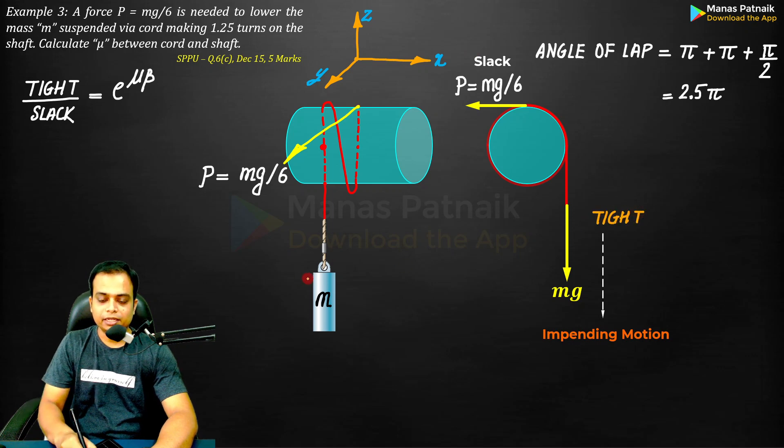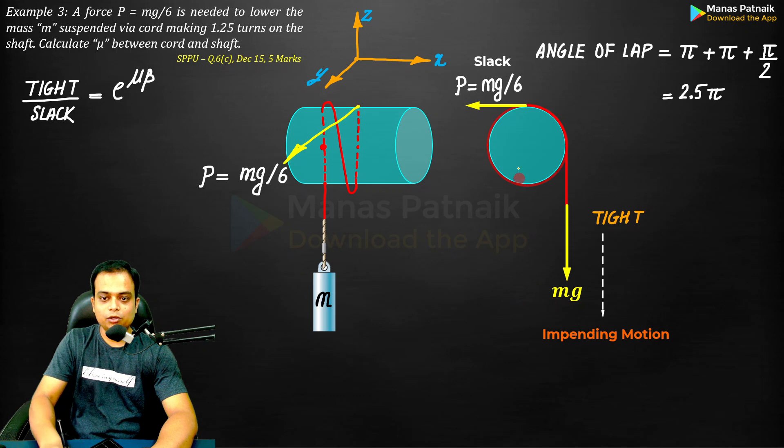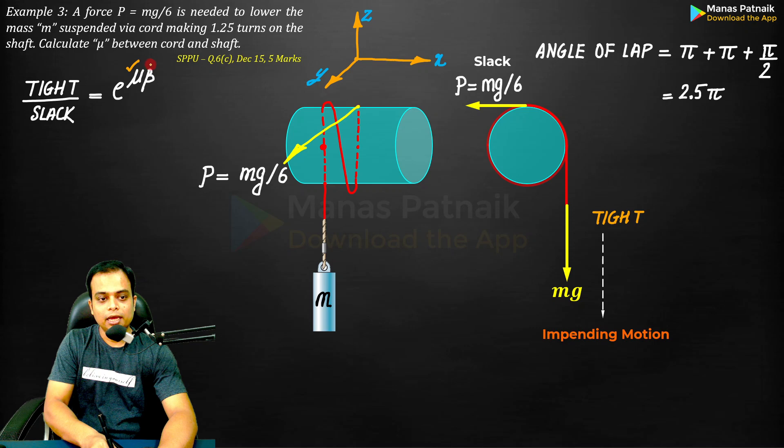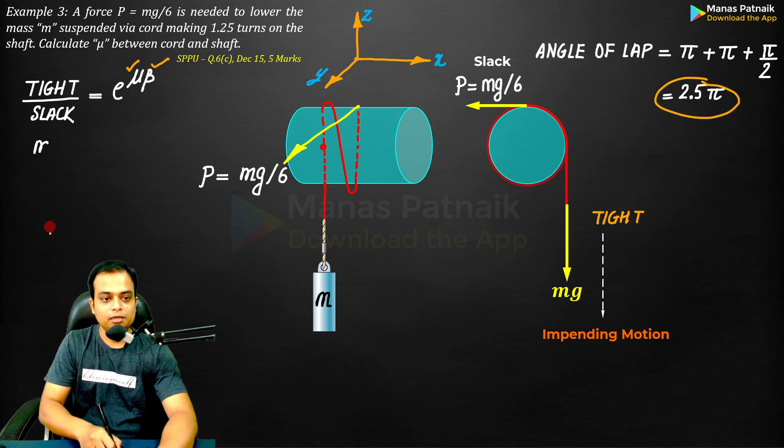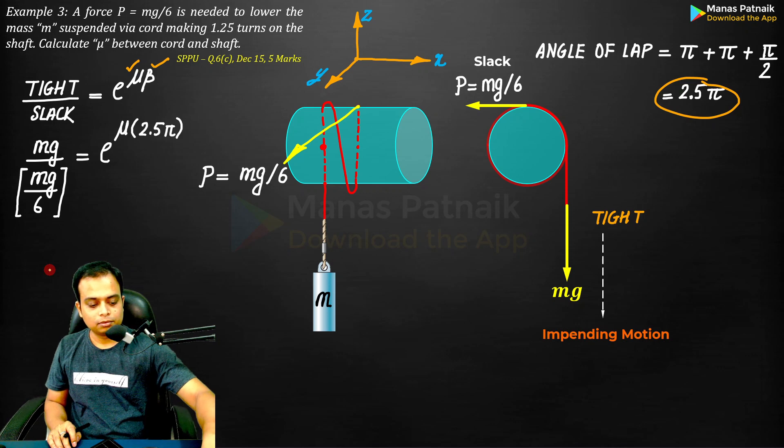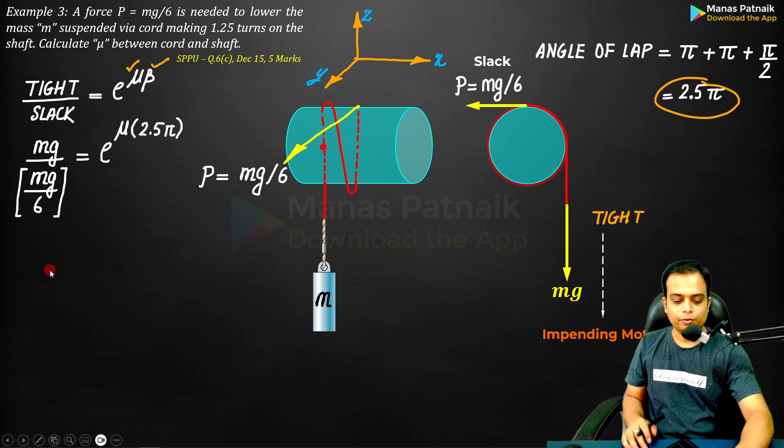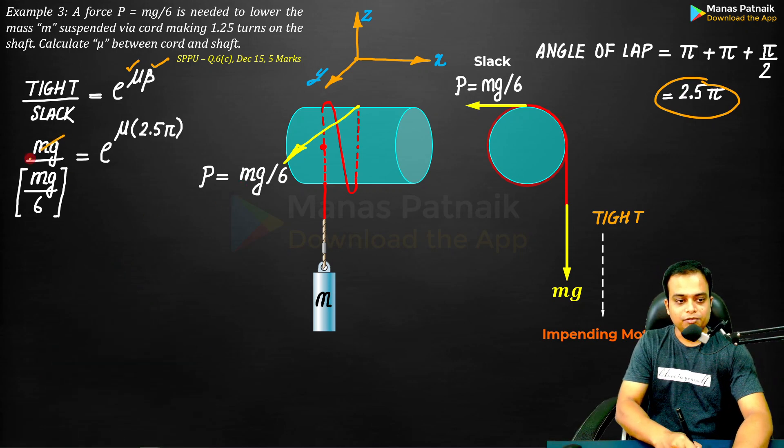Now let's start with the calculation. mg over mg by 6: mg over mg by 6 is equal to e power unknown μ, and then β happens to be 2.5π radians. mg and mg will cancel each other out - what's left in the numerator will be 6.